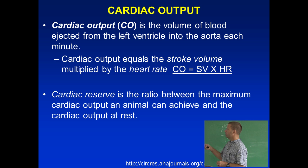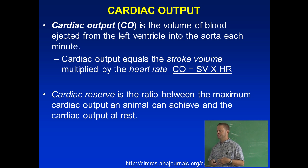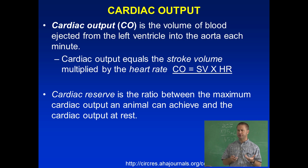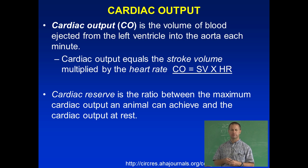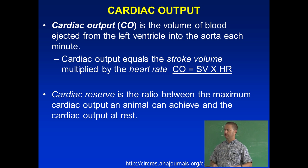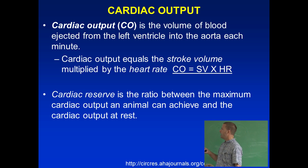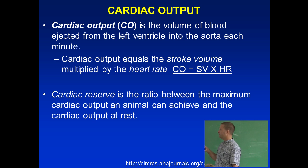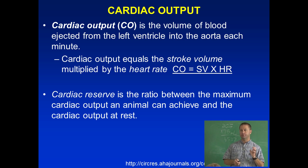Heart rate — we've already talked about. An average heart rate for a larger dog is 60 to 80 beats per minute for a 50-pound Labrador retriever range, maybe a little lower or higher. Stroke volume varies as well; stroke volume is just how much blood the ventricle is pushing with each beat — we're talking about the left ventricle.